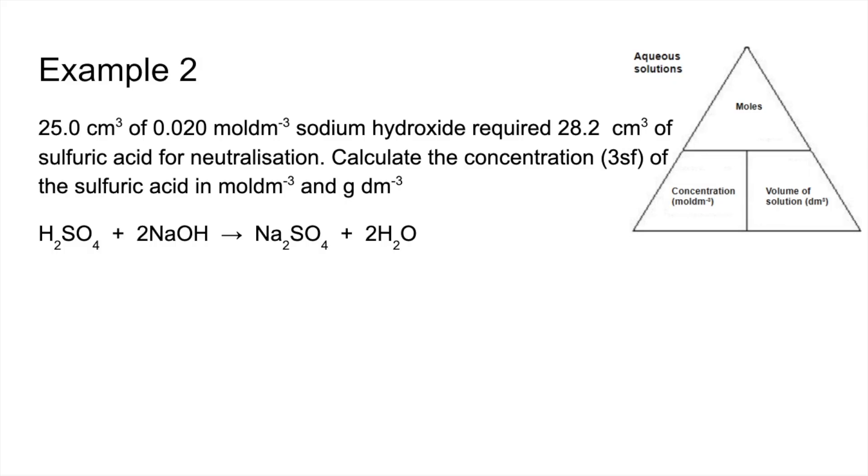Example number two is very similar. It's just a slightly different mole ratio going on. So the known chemical this time is the sodium hydroxide. We've got the concentration and volume for that. So moles of NaOH is 5 times 10 to the minus 4.